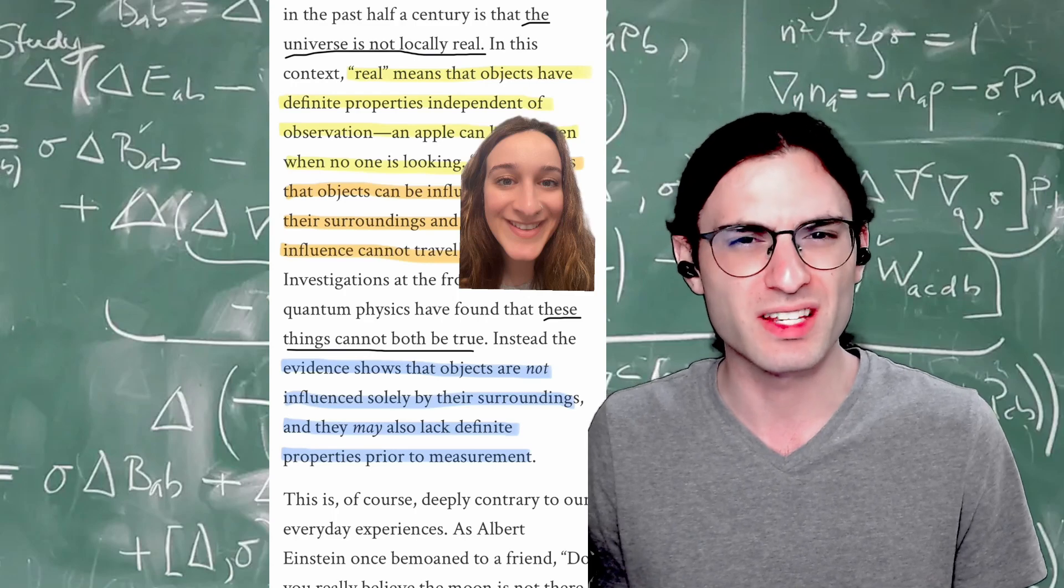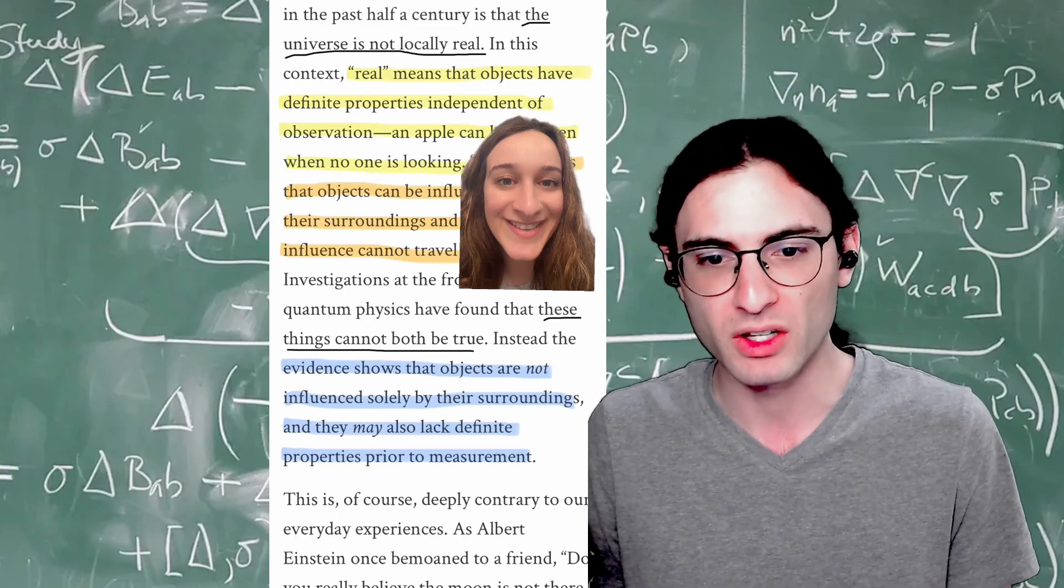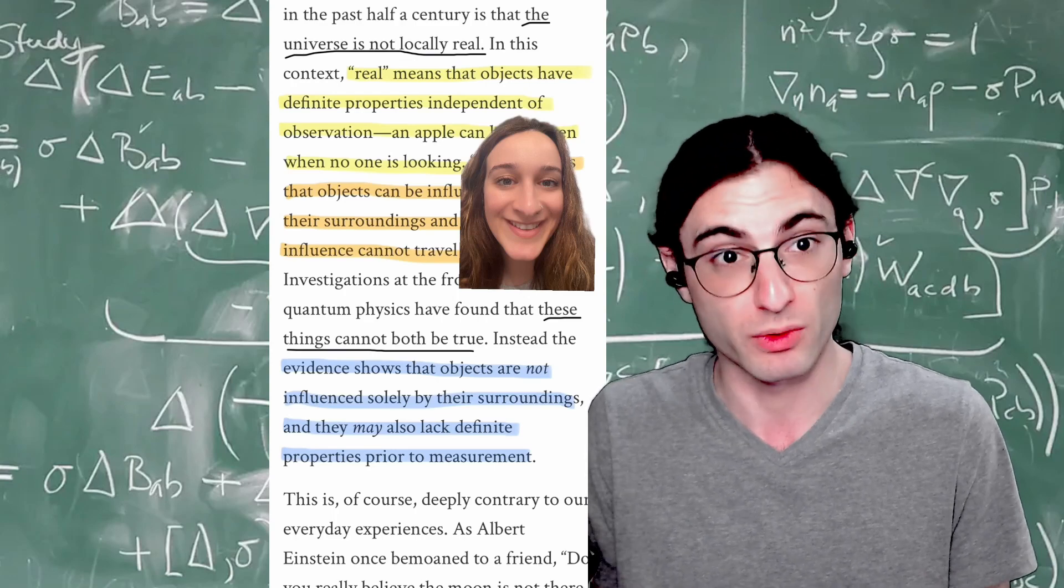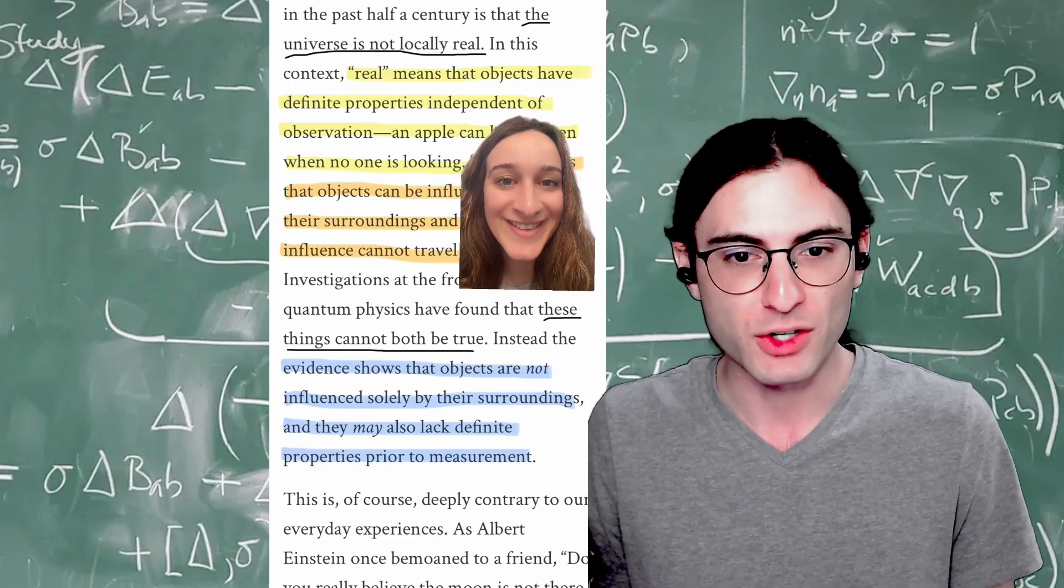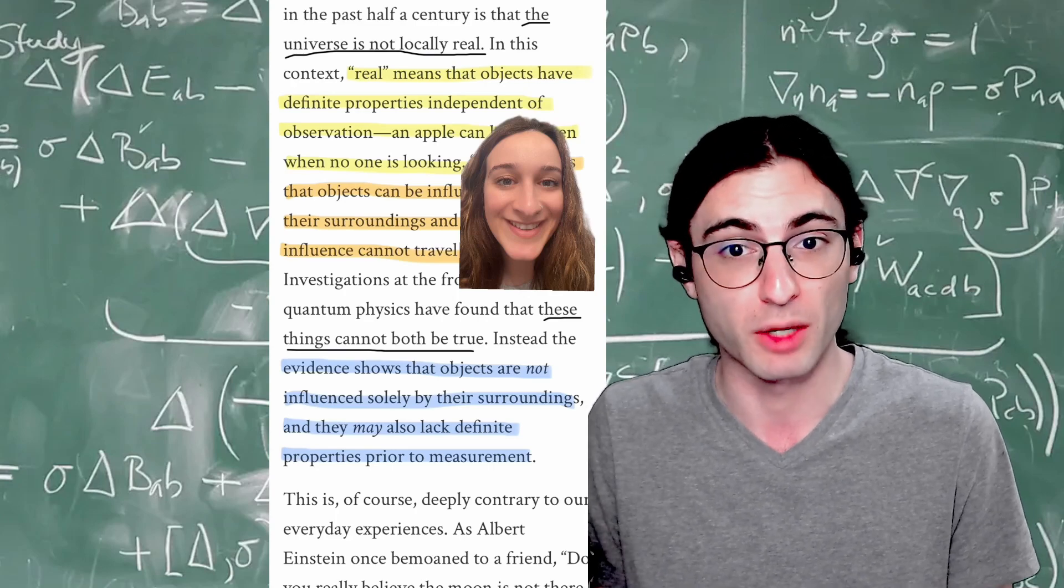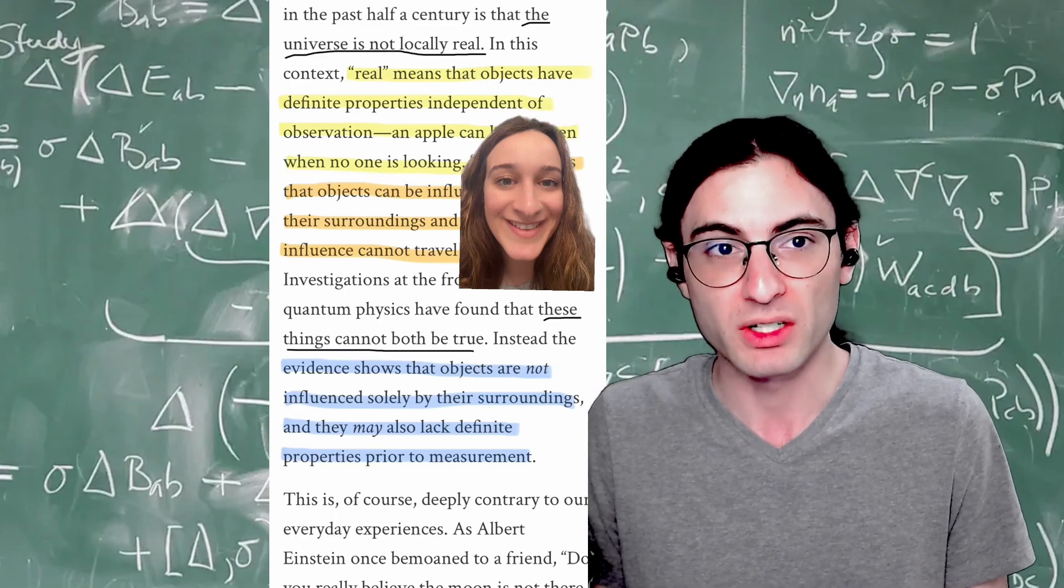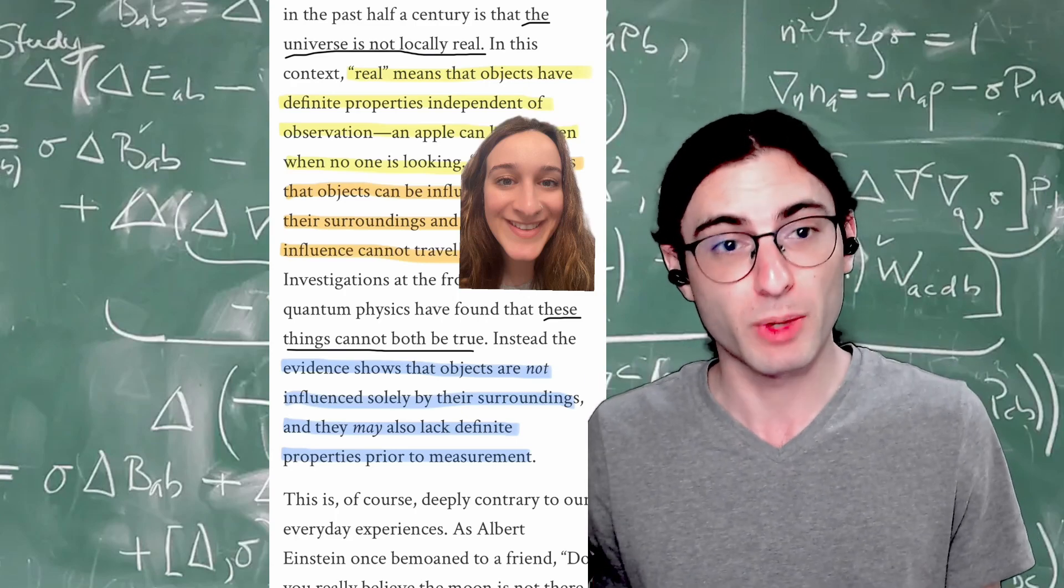The other critical assumption is the assumption of definiteness. Definiteness is basically the idea that when you make a measurement, only one measurement actually results from the experiment. So if you measure either spin up or spin down, you get either spin up or you get spin down, you don't get both. However, this is an assumption. Under the many worlds interpretation of quantum mechanics, every measurement instantiates all possible outcomes.